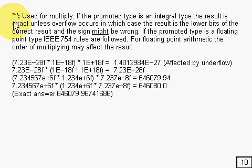In the case of multiplication, you use the asterisk for multiply, and it's basically very similar to the addition and subtraction operators. You get the exact results if it's an integral type, so if it's an int or a long, it's correct unless you get overflow, in which case you get the lower bits of the correct result and the sign might or might not be wrong. And if the promoted type is a floating point type, then you just use the same rules as IEEE 754.